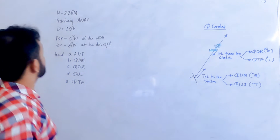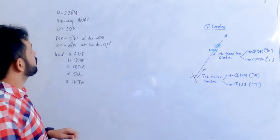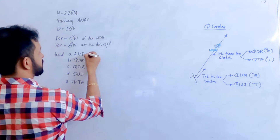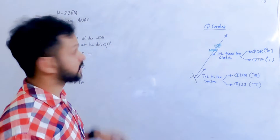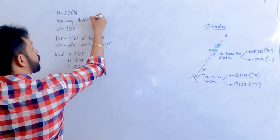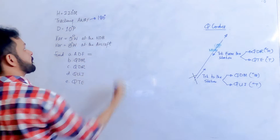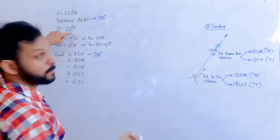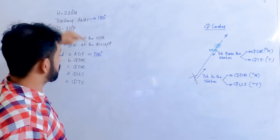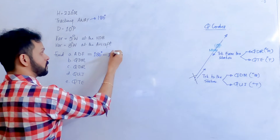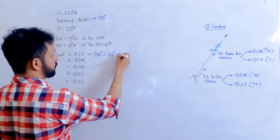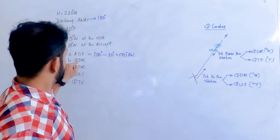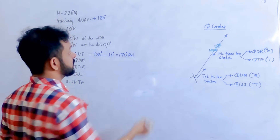Now, there are some things you can instantly find in this question. You're given the heading, tracking away from the station, drift is given, and you're asked to find the ADF indication. Since you're tracking away from the station, the reference is 180 degrees. With 10 degrees port drift, the ADF reads 180 minus 10 equals 170 degrees.